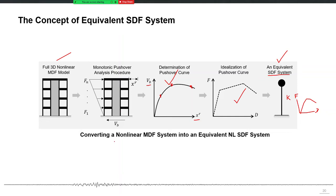So there is a concept called converting a nonlinear multiple degree of freedom system into an equivalent nonlinear single degree of freedom system. But the issue is that if your building is controlled by the first mode only — if it is dominated by the first mode only — you can push your building in the first mode pattern and the resulting pushover curve can be given as an input to your single degree of freedom system. However, if the multiple degree of freedom system is dominated by more than one mode, then you cannot have just one single degree of freedom system for that building; you may have to have more than one.